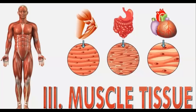Basically, our skeletal system is made up of bones, muscles, tendons and ligaments, and different types of things which work together to help us move.